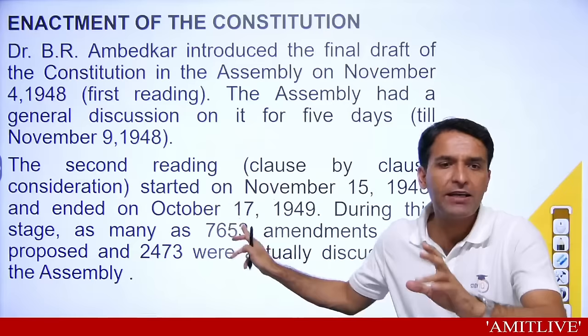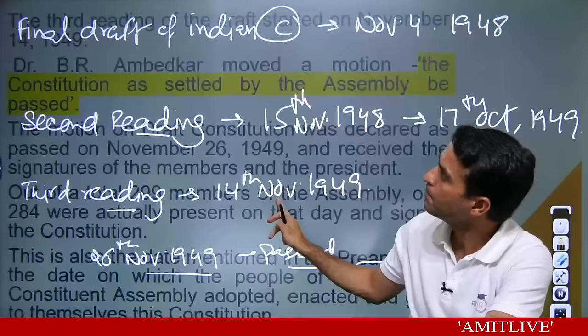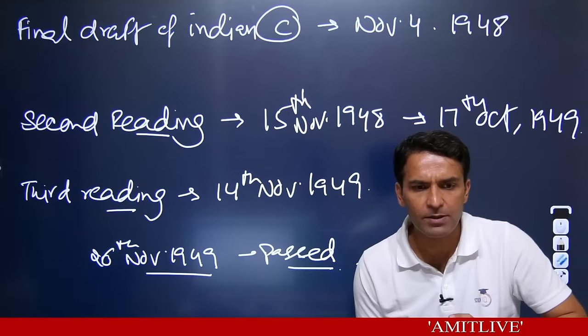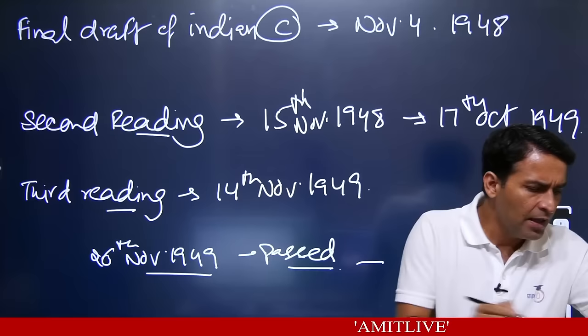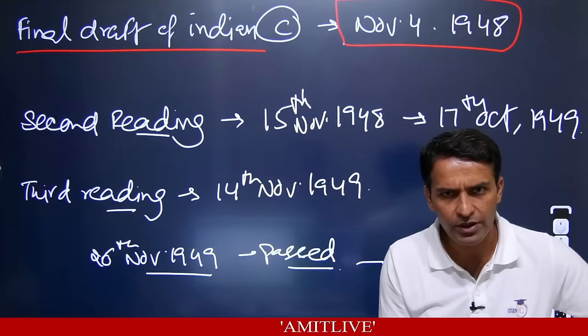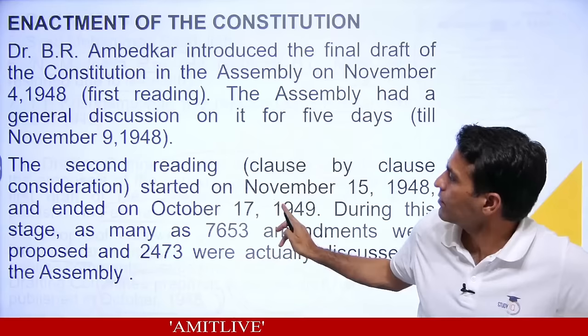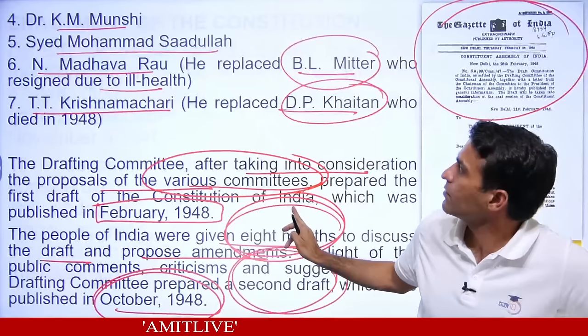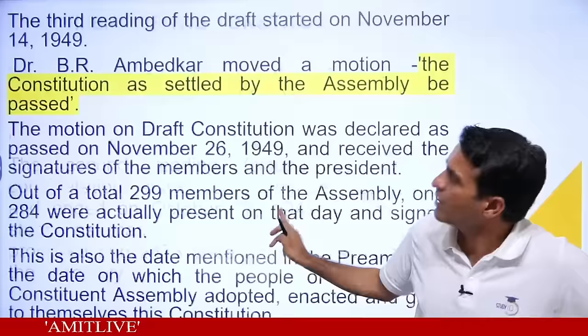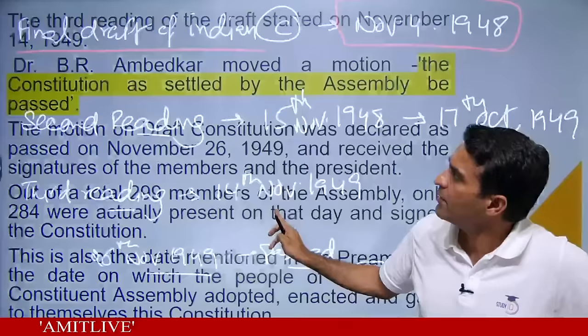Now the chronology: the final draft of the Indian constitution was ready on November 4, 1948. After debate and discussion, the Drafting Committee prepared a second draft, then debated further and completed the entire draft of the constitution. November 4, 1948.